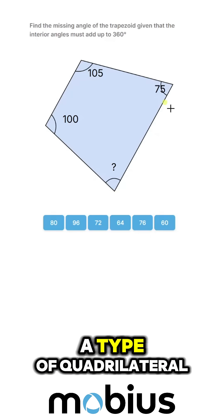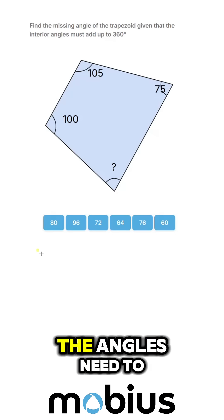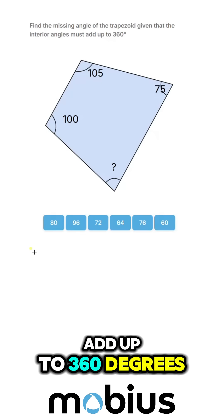So, a trapezoid is a type of quadrilateral, a four-sided shape, and for any four-sided shape, the angles need to add up to 360 degrees.